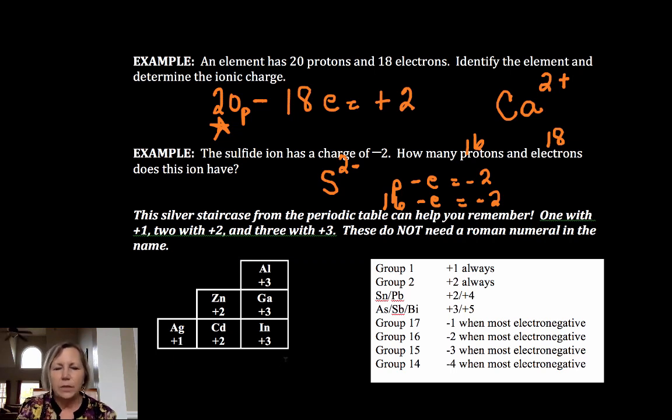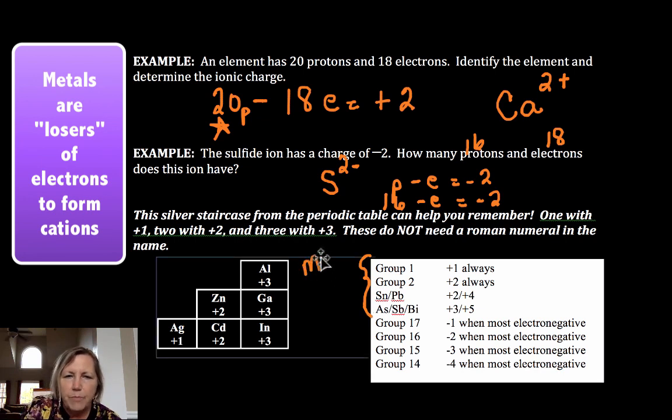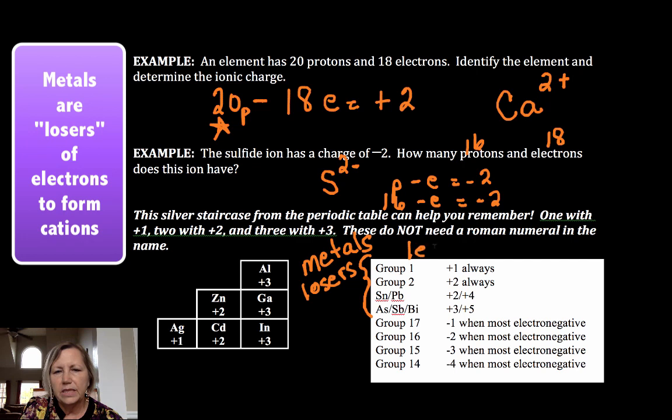Now this is a little bit of a memorization tool right now. As you move forward in your understanding of the structure of the atom, I think you'll understand the why of this. But I want to look at some of the common cations and anions. Now metals are losers of electrons by and large. They lose electrons. They become less negative due to that loss. Group 1 always loses 1 to become plus 1. Group 2 always loses 2 to become plus 2.